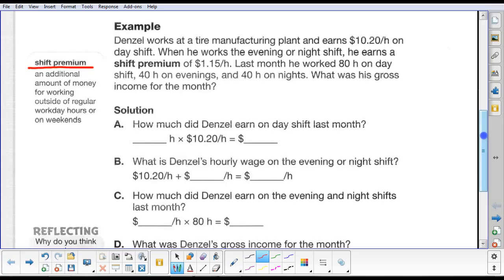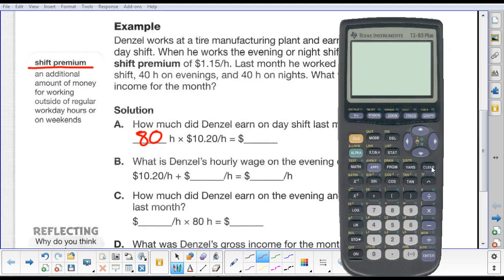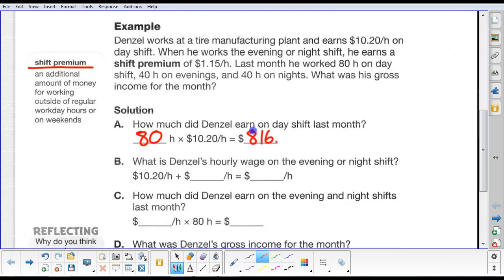Well, here's the solution. How much did Denzel earn on day shift last month? Well, we know he worked 80 hours on day shift, so we'll put in 80 right there at $10.20 per hour. So let's get our calculator out. Let's take 80 hours, multiply that by $10.20 per hour. So on day shift, he made $816.